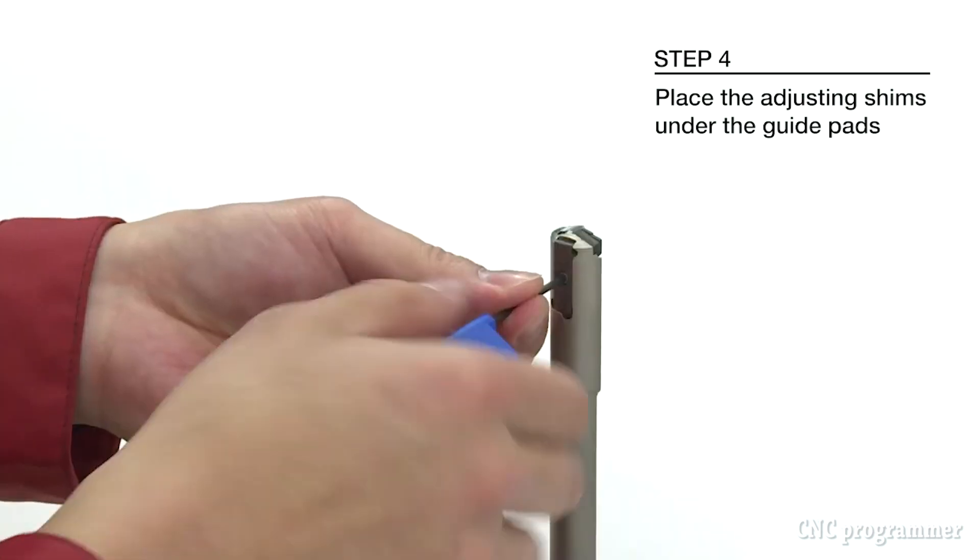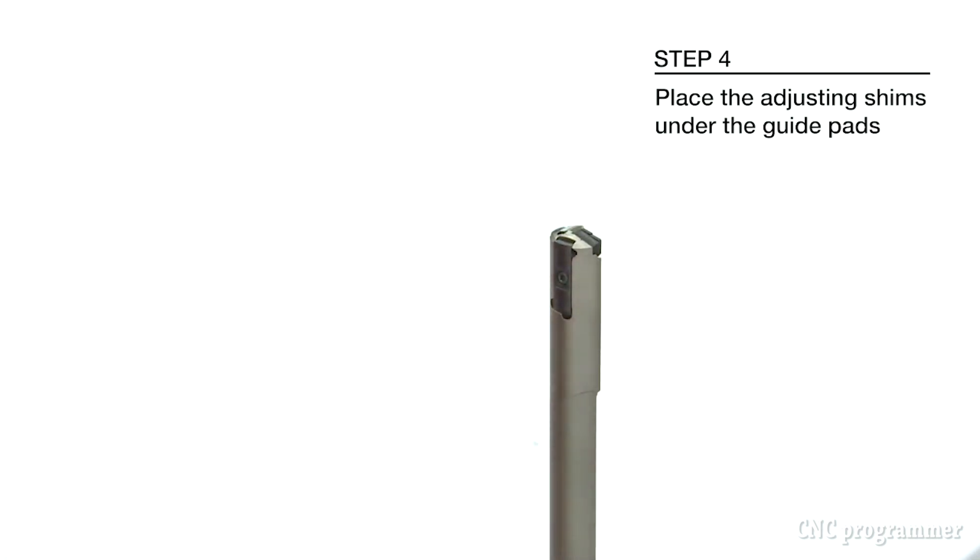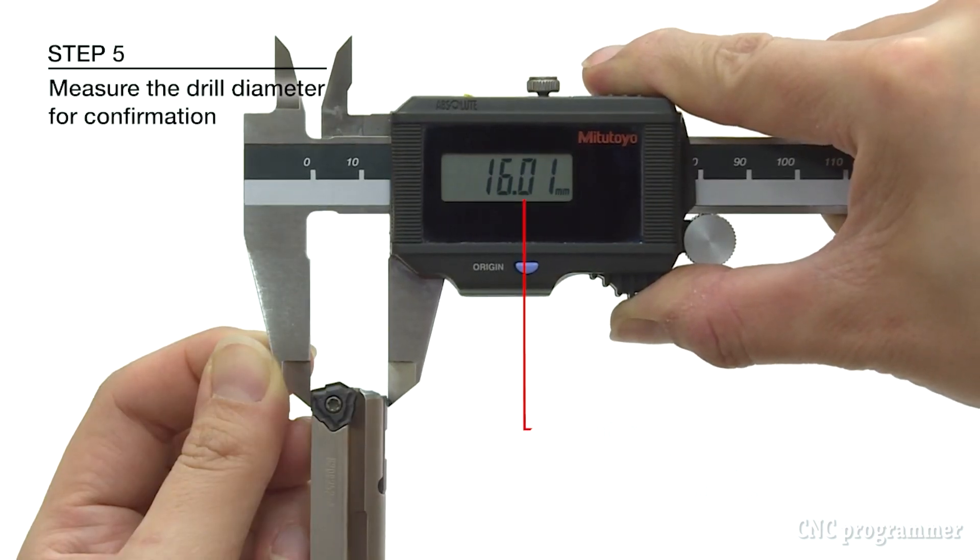Precision ground insert with three cutting edges. Two types of bodies available for machining centers, lathes, and gun drill machines.